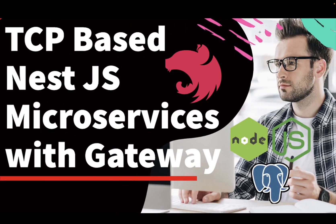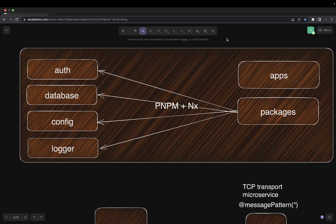My initial idea is to cover TCP-based microservices first, then gRPC, and then we can also include Kafka and RabbitMQ as a transport. All these services we are going to build with a gateway. I'll talk about the architecture — what we are going to build — and we'll build the same example with these different transports: TCP, gRPC, and Kafka.